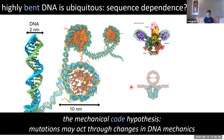That is what people call the mechanical code hypothesis. Can mutations act directly through changes in DNA mechanics? And if that's the case, then the evolution of the genetic code, codon choice, and many other properties could have been dependent on sequence-dependent DNA mechanics. To answer this question we actually need a lot of data — many different sequences with measured DNA mechanical properties — and that is the topic of this talk.